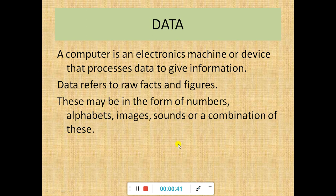Whenever you are writing something — for example, in MS Word — you are writing a paragraph. That paragraph consists of numbers, characters, and alphabets. These are all data. It can be a number, it can be an alphabet, images, sound, or a combination of all of these. So when I give data to the computer, it processes it and gives us the information.